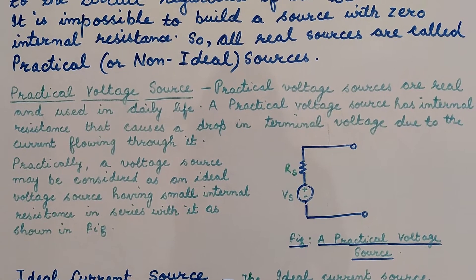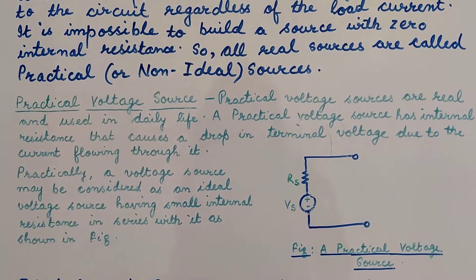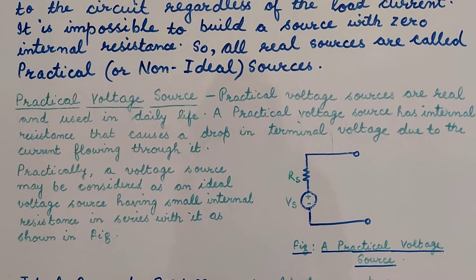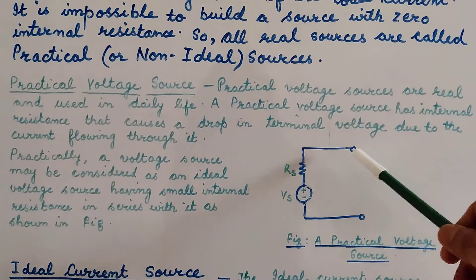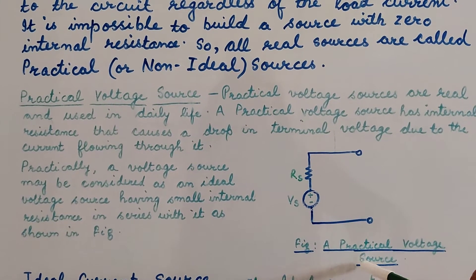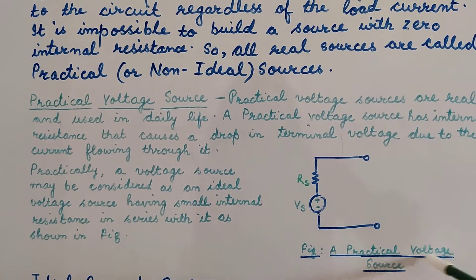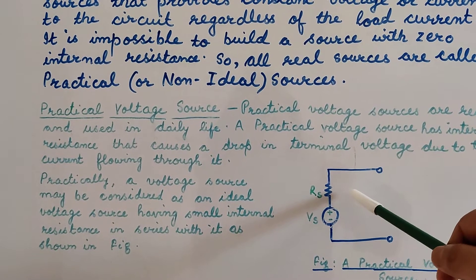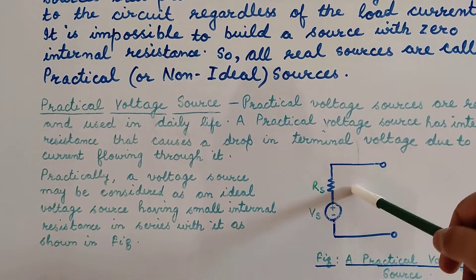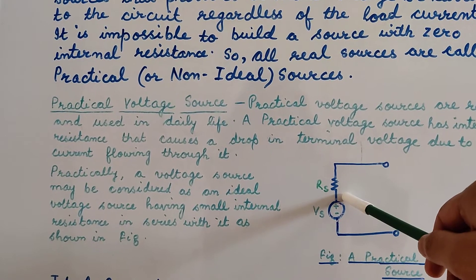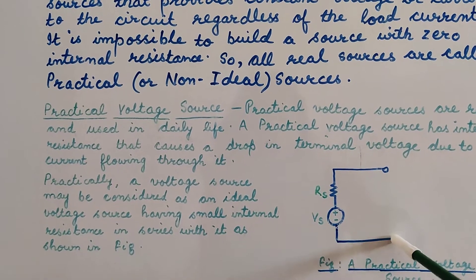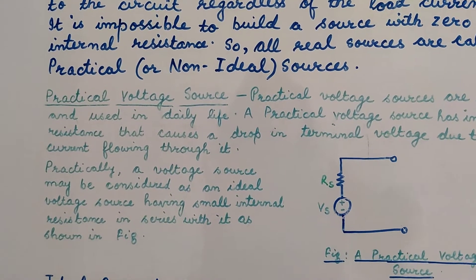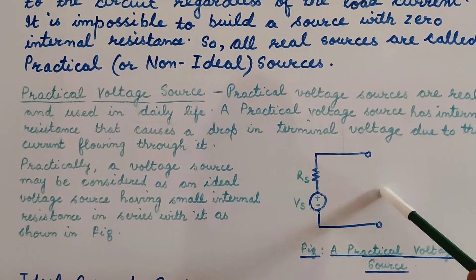A practical voltage source is an ideal voltage source having a small internal resistance connected in series with it, as shown in this figure. So when current flows through this source, there will be some voltage drop across this resistance. As a result, the voltage obtained at the terminal will not be the same as Vs, but it will be a little bit less than Vs. So this is an example of a practical voltage source.